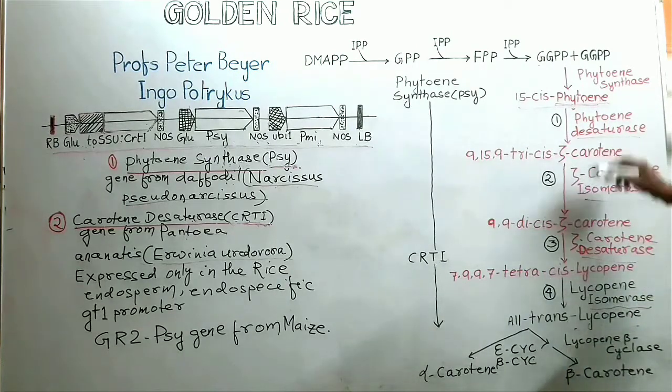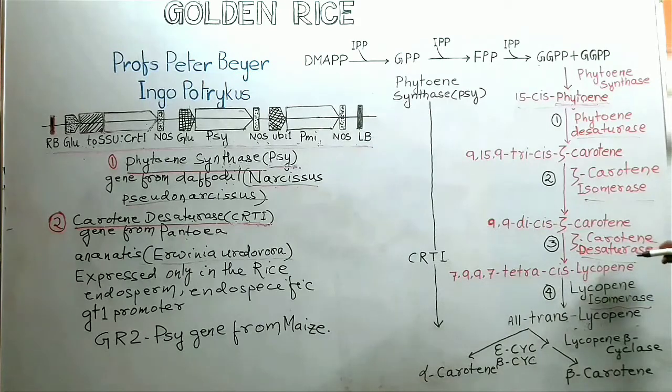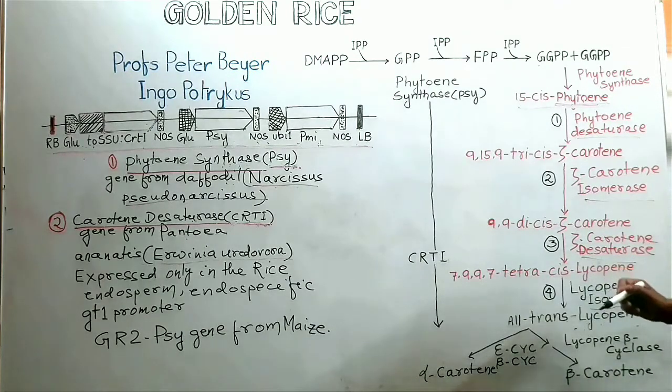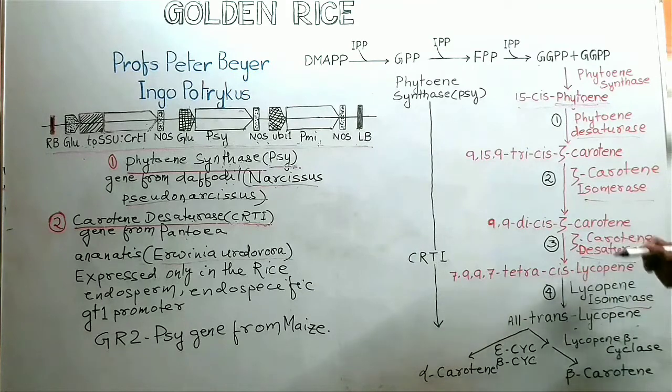To achieve the same outcome, plant utilizes at least four different enzymes. Out of four different enzymes, two are desaturases and remaining two are isomerases. Because in rice grain these enzymes are not present, so beta-carotene is not synthesized in the rice grain.